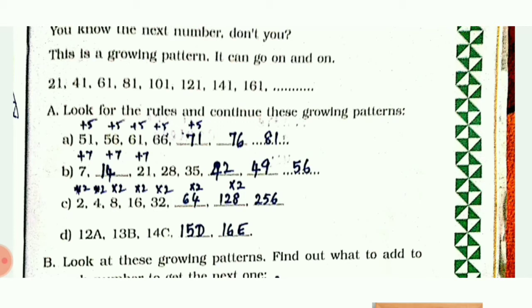The next one is 7, 14, 21, 28, 35. Here the pattern is getting repeated by increasing the number by 7.